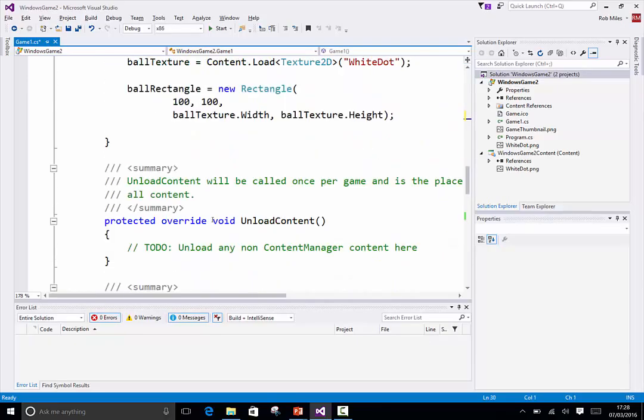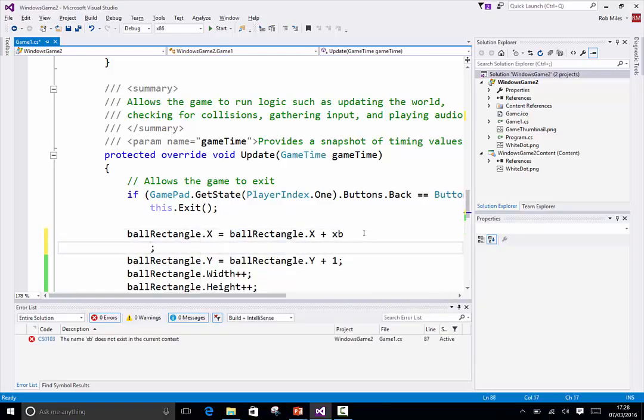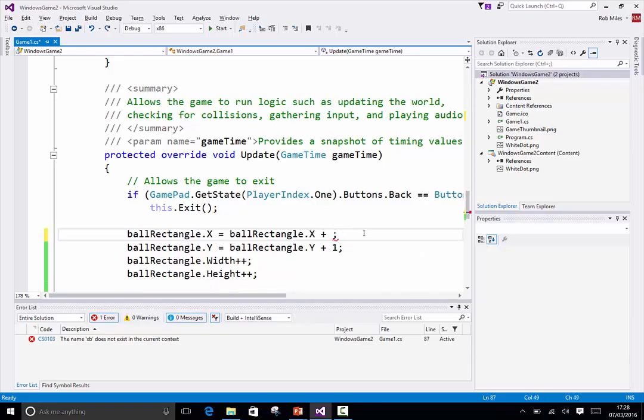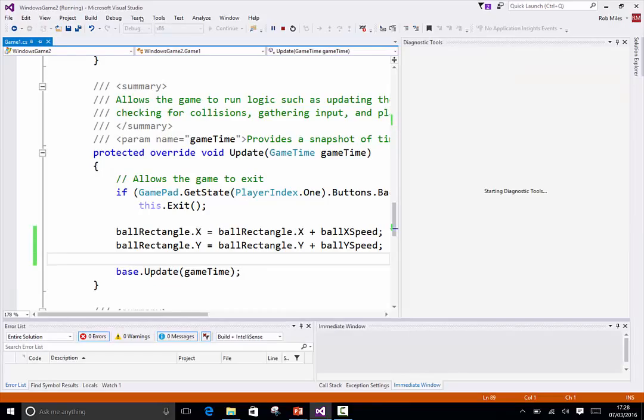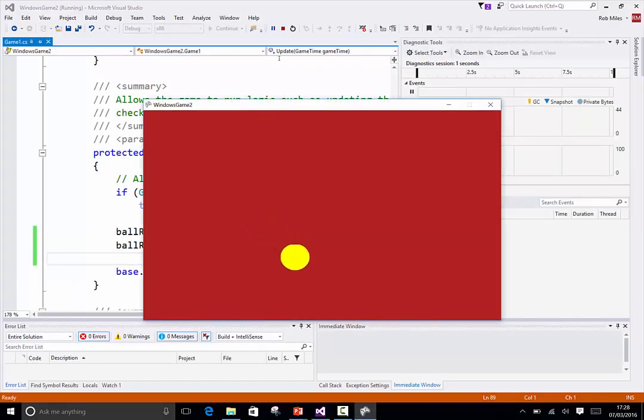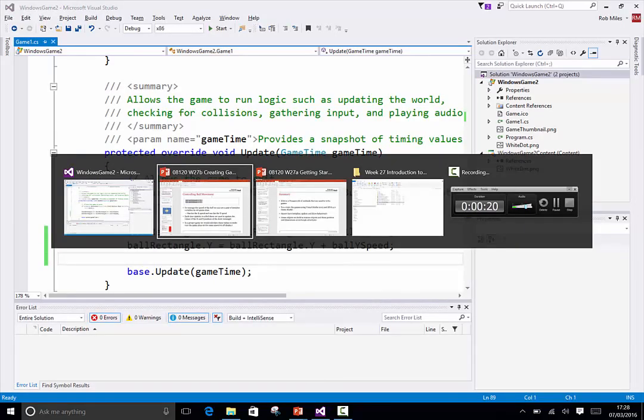And then in here I'm gonna go equals ball rectangle plus X balls, oh, didn't work. Why didn't that work? X ball speed. Thank you. And then this guy we can go plus ball Y speed. There. So now it's gonna go a little bit faster. We won't make it grow anymore, which is a bit sad. But now it'll zoom down between three times the speed. There it goes. So we're okay with that. Right, fine. So that's how we're gonna use the speed in the game.